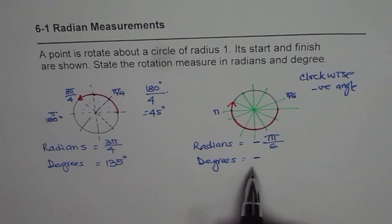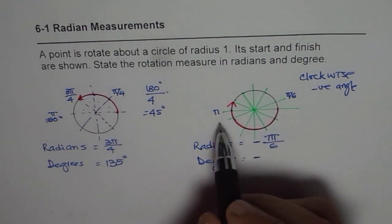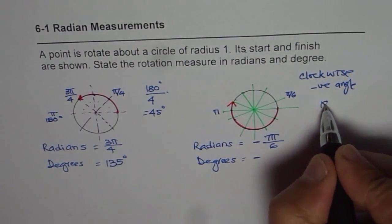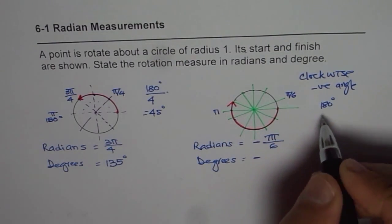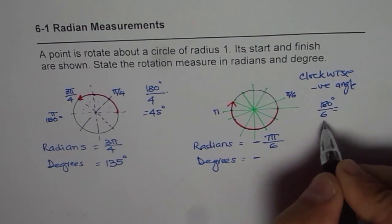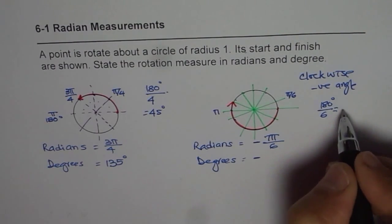Let's do it in degrees now. In degrees, what we did was 180 degree was divided into 6 equal parts. So each part is how much? 30 degrees.